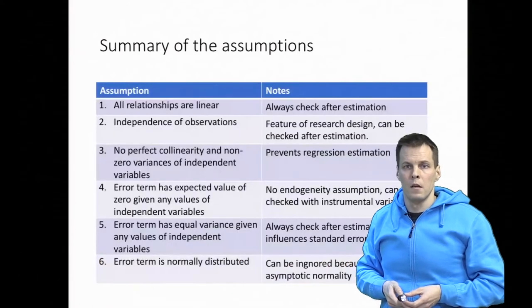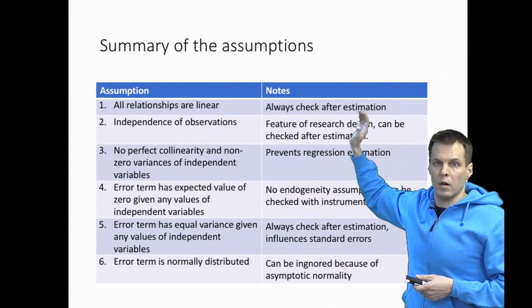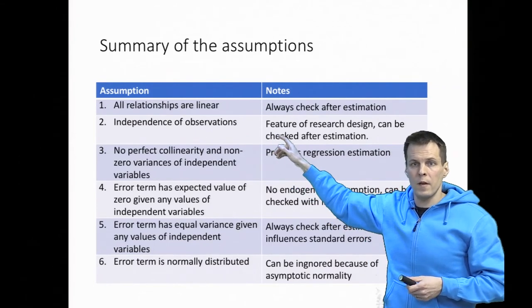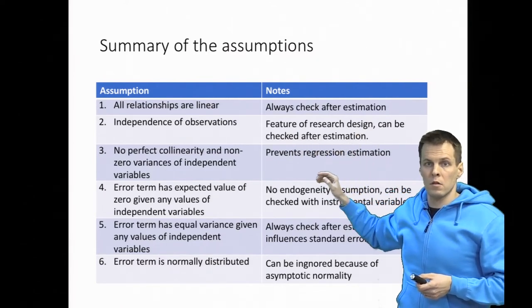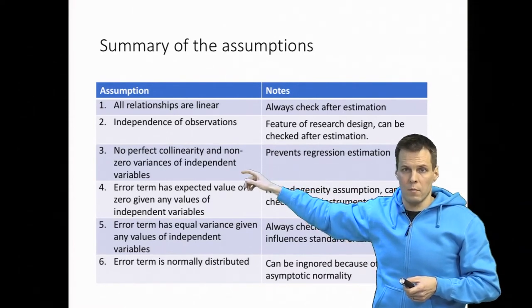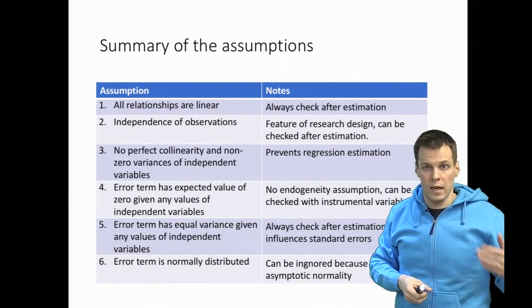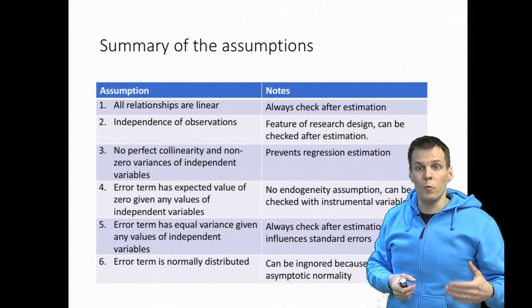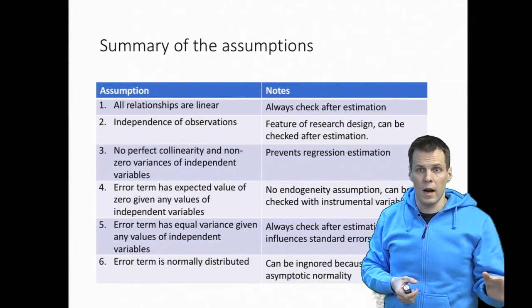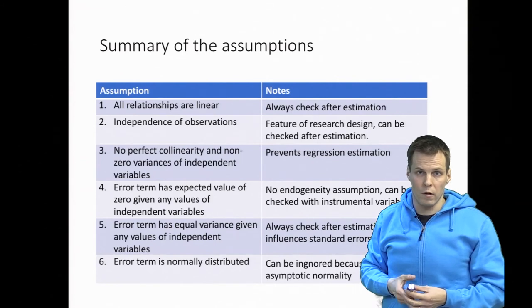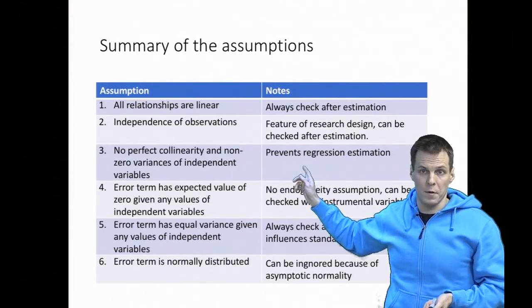In summary, we have six assumptions. First, all relationships are linear — this can be checked after estimation. Second, independence of observations or random sampling — this is a feature of your research design and can be partially checked after estimation. Third, no perfect collinearity and non-zero variance of independent variables — if this fails, the regression model cannot be estimated at all. For example, if you study gender effects but only observe women, there's no variation in gender and you can't estimate a gender effect. This doesn't need to be checked because the software will fail to complete the regression.